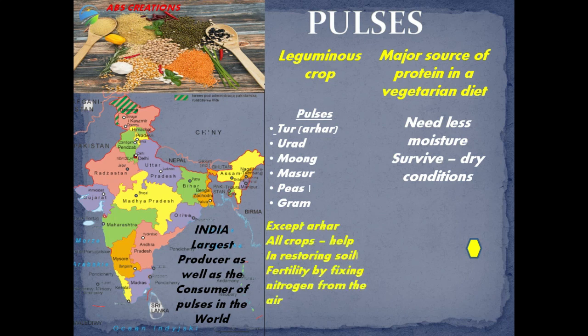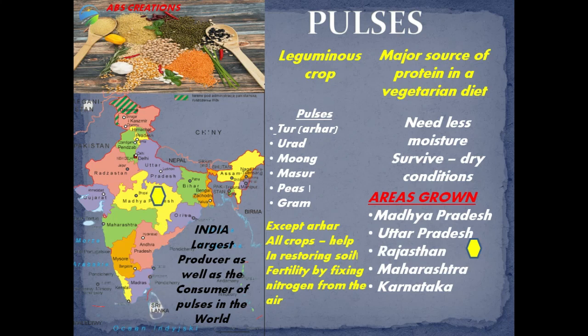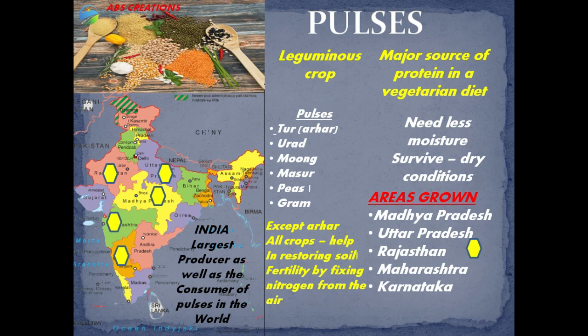Except arhar (tur), all crops like urad, moong, masur, peas and gram help in restoring soil fertility by fixing nitrogen from the air. The areas where pulses are grown are Madhya Pradesh, Uttar Pradesh, Rajasthan, Maharashtra and Karnataka. Pulses are cultivated more in number in these regions and they act as a major source of protein in the vegetarian diet.